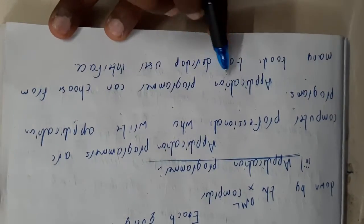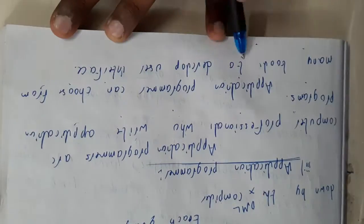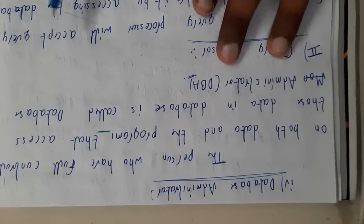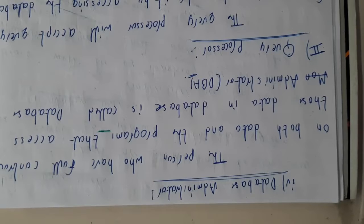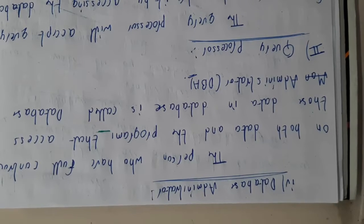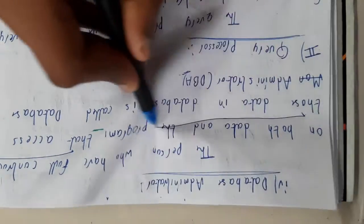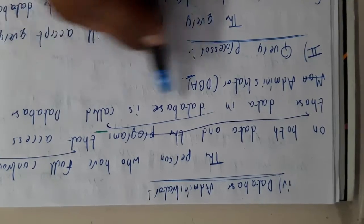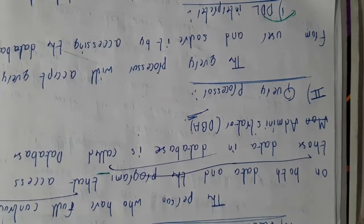Application programmers are the computer professionals who write application programs. Application programmers can choose from many tools — there are many tools from which they can use a particular one to write applications. Then, database administrator is the fourth type. The database administrator is the king of the database — he will be accessing full control on both data and programs, having all accesses to data in the database.